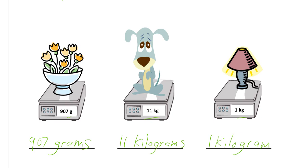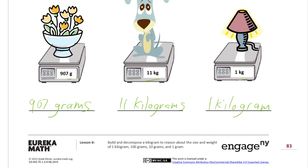Now, a kilogram is about two pounds. So this lamp would be about two pounds. And this dog would be about 22 pounds. And that's it. We're out of homework for now. Thank you.